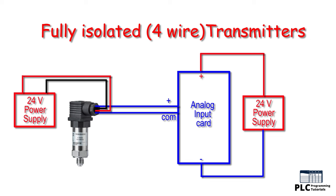Fully isolated 4-wire connection: the transmitter and control panel use separate power supplies, and the 4 to 20 milliamp signal flows through separate cable cores between the transmitter and the control panel. It is assumed that the power to drive the 4 to 20 milliamp loop is derived from the control panel. The advantage is that electrical interference on the voltage supply lines will not be transferred to the 4 to 20 milliamp signal line, reducing the risk of fault signals being received at the control panel end.